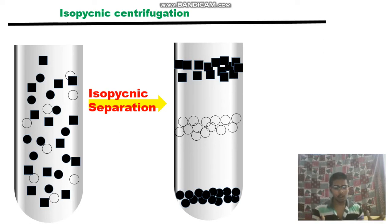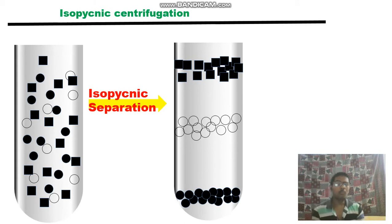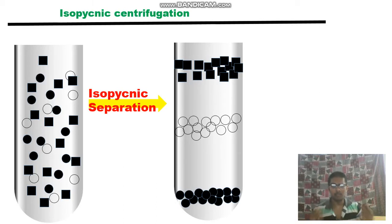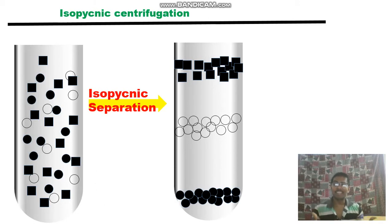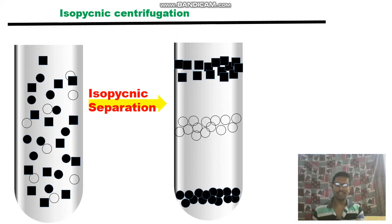The density of biological particles actually depends upon the osmotic pressure of the solution. Osmotic pressure comes from the gradient you are using, so the type of gradient used matters very much. Size of the particle does not affect isopycnic centrifugation — particle size can only affect the rate at which they are separating, but it does not affect the efficiency of separation.